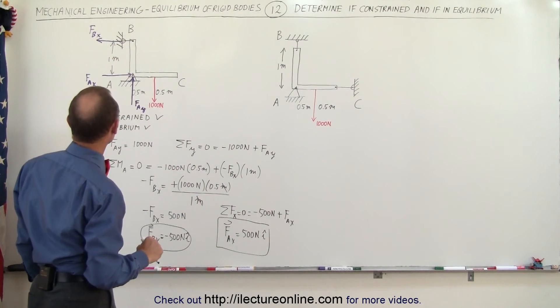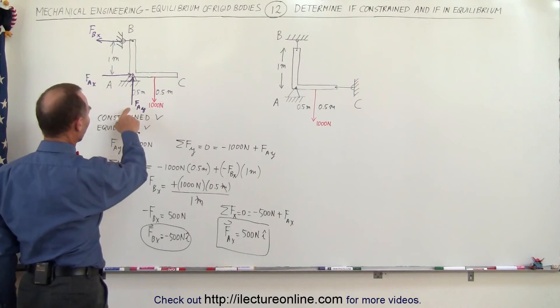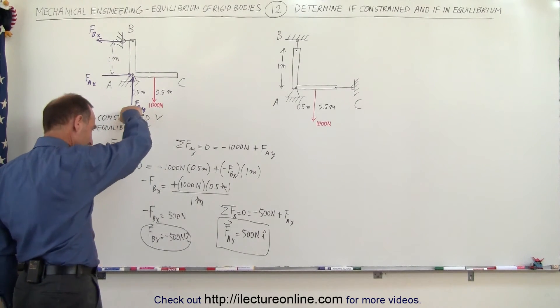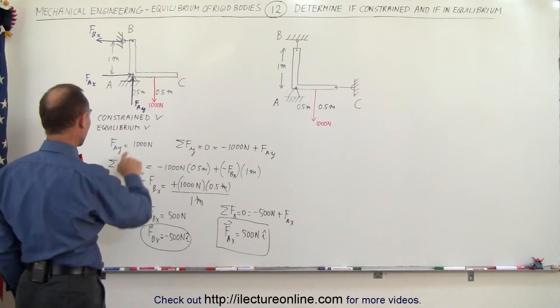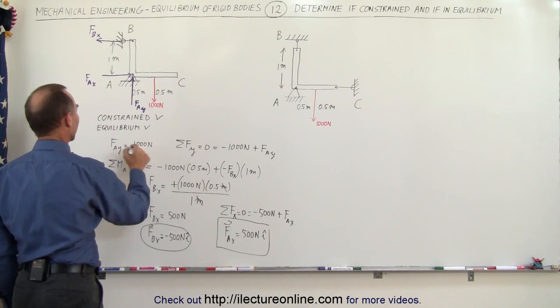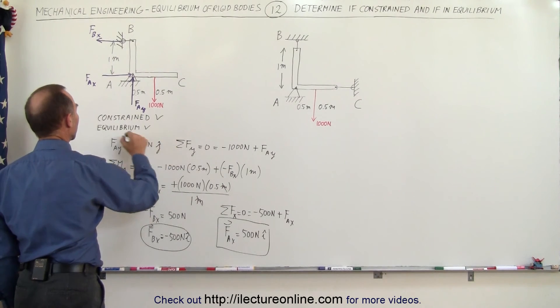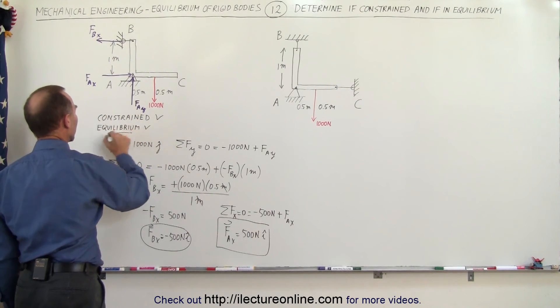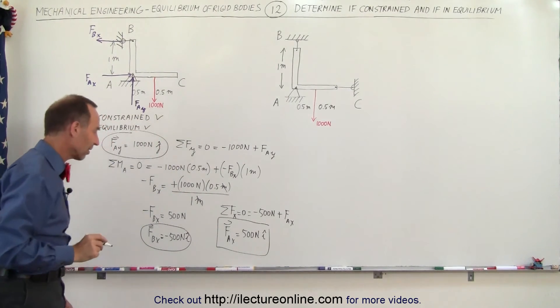The force of A in the y direction — written as a vector — is 1000 newtons in the y direction. Those are the three answers we were looking for. It's a stable situation and we can determine all of the forces.